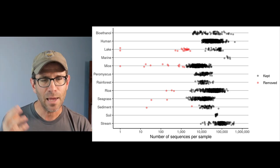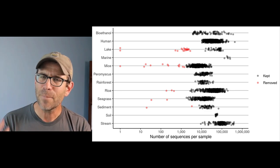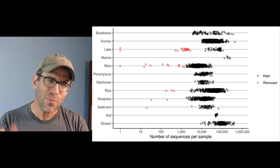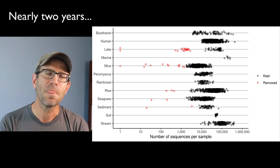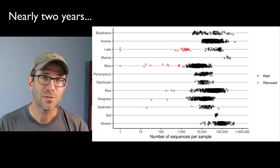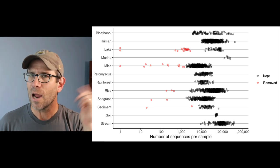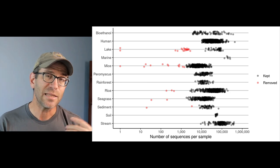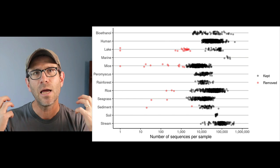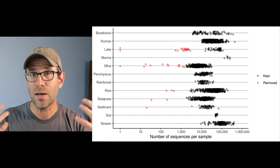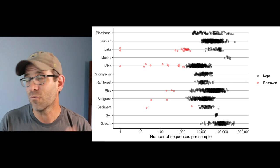You'll notice that some of the points are transparent black and some are transparent red. If a sample was red, it was removed from that study when I was analyzing it. I want to recreate this figure because I have another project using these same 12 samples. I want to see if I write the code to make the same figure twice, more than a year apart, how similar my code would be. So that's my goal for this episode - recreate this figure and see how much has changed.